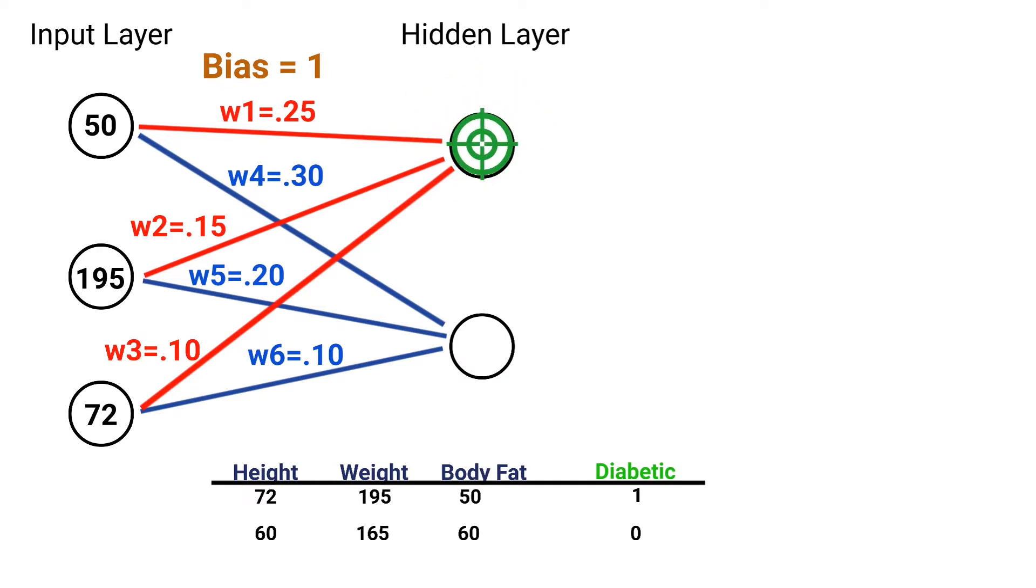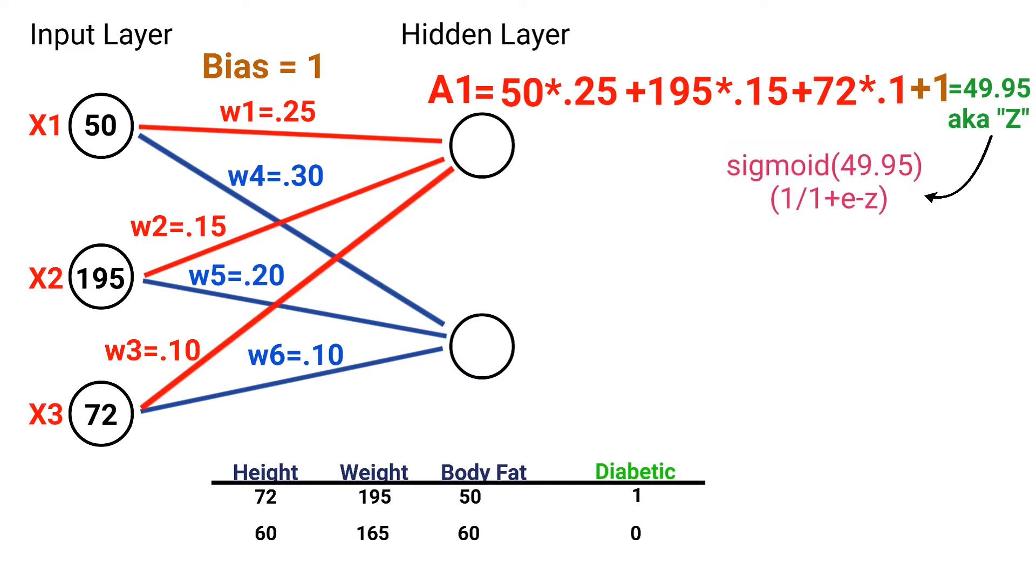Now, let's calculate the value for our first node in our hidden layer. We'll call this node A1. So first, we take our first input value of 50 times our first weight of 0.25 plus our second input value of 195 times our second weight of 0.15 plus our third input of 72 times our third weight of 0.1. Then to that whole equation, we add our bias of 1, and that gives us a value of 49.95, also known as Z. Next, that value of Z gets passed to our sigmoid activation function. You may remember this from the other videos. That results in a final activation value for our neuron of 0.99.